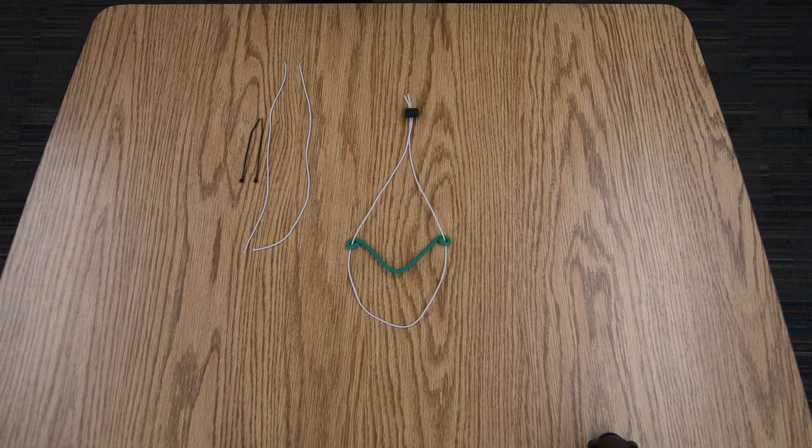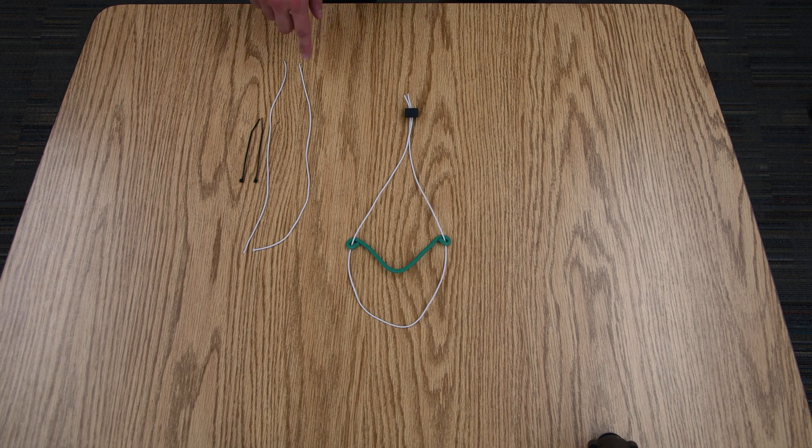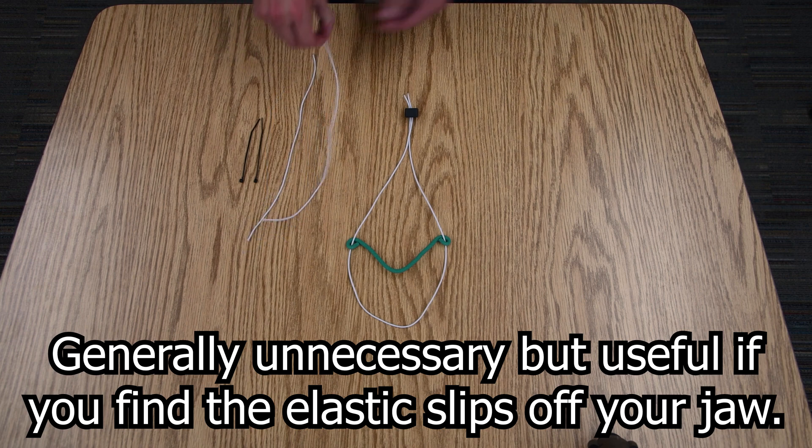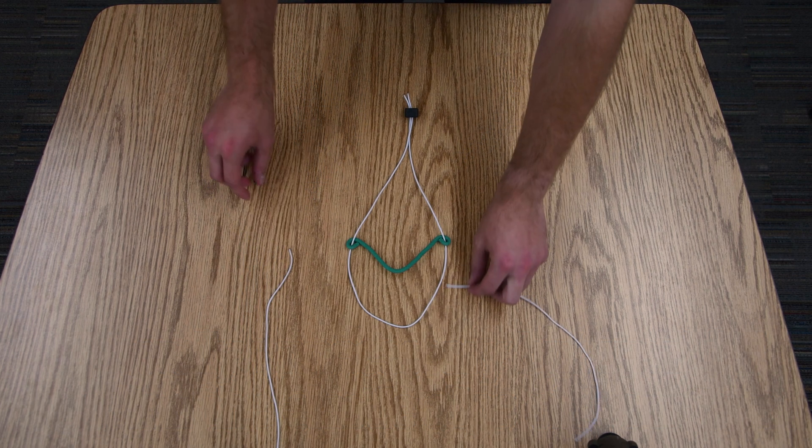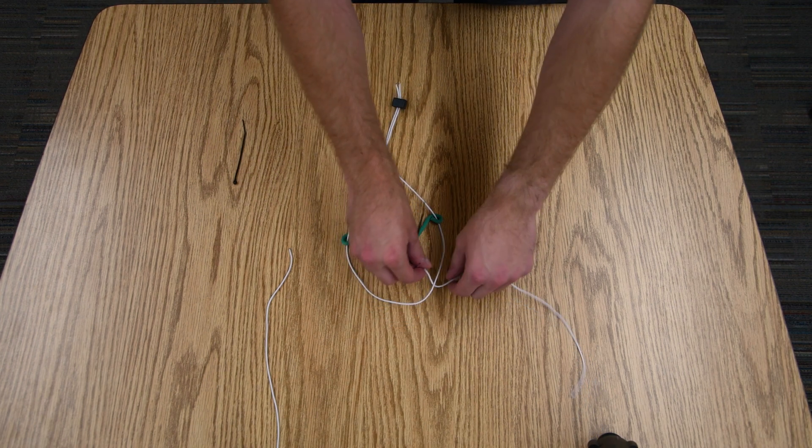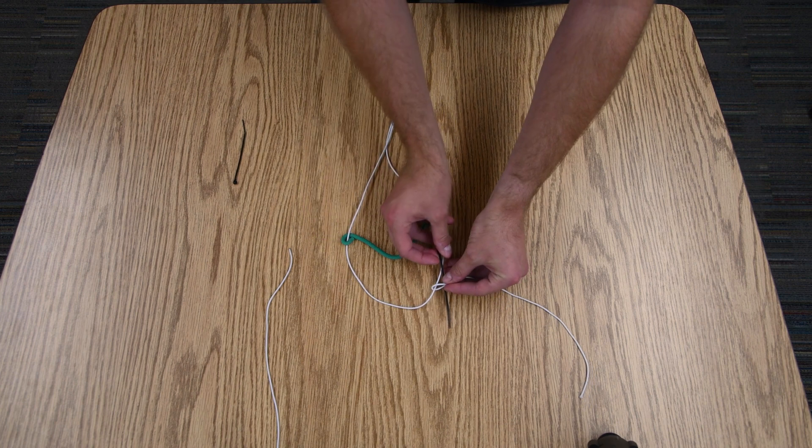Taking things a step further, you can get a better fit by making a second lower strap designed to go around the lower part of your head. You can do this by taking some more elastic material and connecting it to the bottom part of the current mask fitter with small zip ties.